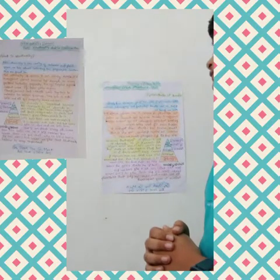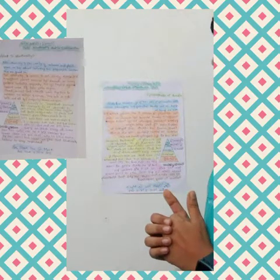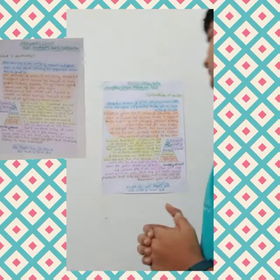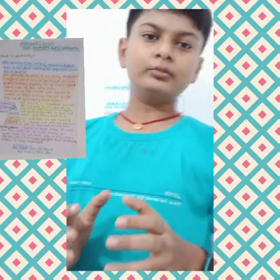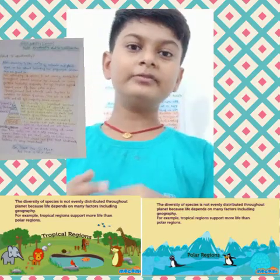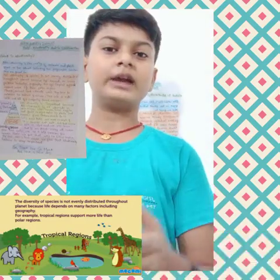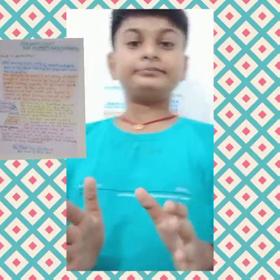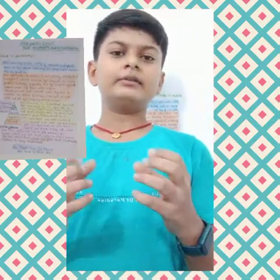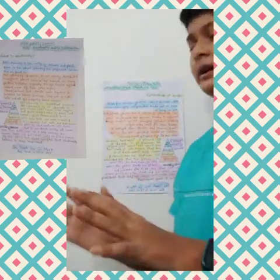The biodiversity of species is not evenly distributed throughout the planet because life depends on many factors, including geography. For example, tropical regions support more life than polar regions. Human life, plant life, and animal life can't live everywhere — life is not possible everywhere. In the polar region, only some animals can live; not humans, not plants, not tigers, leopards, or lions, because they can't adapt to that nature. So we can live at the place where our nature can adapt to the area, meaning we can live in tropical regions rather than polar regions.